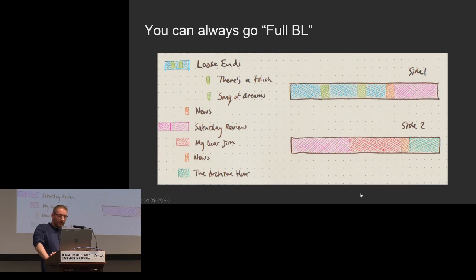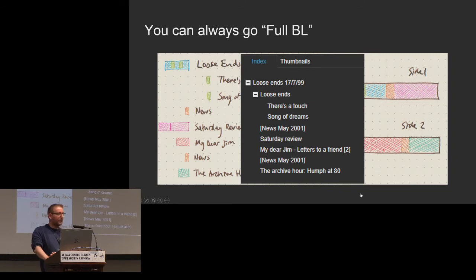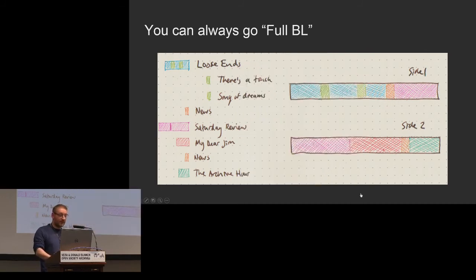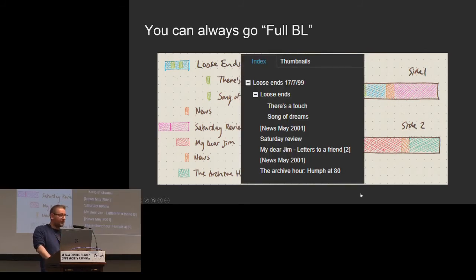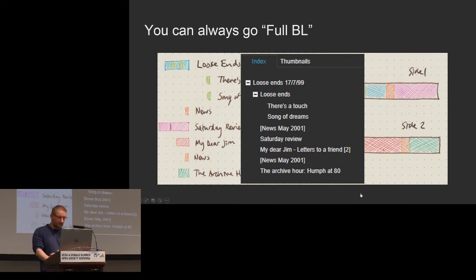All different programs with complex metadata and display requirements. IIIF allows us to generate a table of contents in the Universal Viewer and navigate between them. Because we can construct this concurrent virtual timeline, the Saturday Review program — which starts at the end of side one and carries on into side two — can be listened to in its entirety without the end user having to understand the archival nature of how it was put together, although you can still choose to listen to side one and side two independently. You can listen to it as a logical unit or as it existed on the tape.